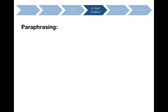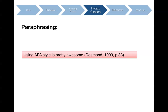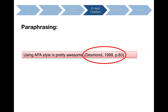Now let's say you want to say the same thing but using different words. Instead of directly quoting, maybe you want to paraphrase the idea. In that case, you don't need to use any quotation marks, but you should still cite the source. It's really important that you tell the reader the idea was not originally yours. The format for in-text citation stays the same.